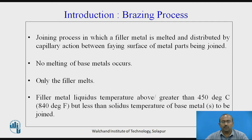In the introduction to brazing: it is a joining process in which a filler metal is melted and distributed by capillary action between the faying surfaces of metal parts being joined. No melting of base metal occurs; only the filler material gets converted into molten form. The filler metal liquidus temperature is above 450 degrees Celsius but less than the solidus temperature of the base metal to be joined.